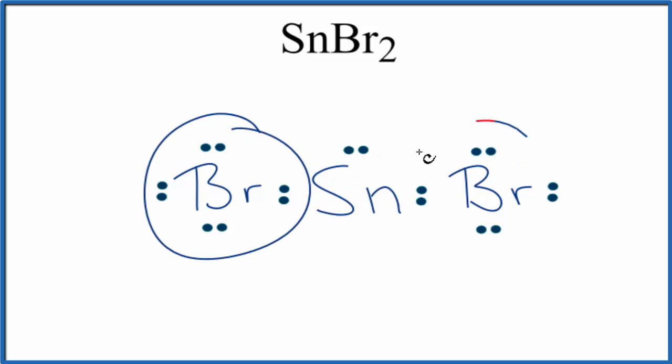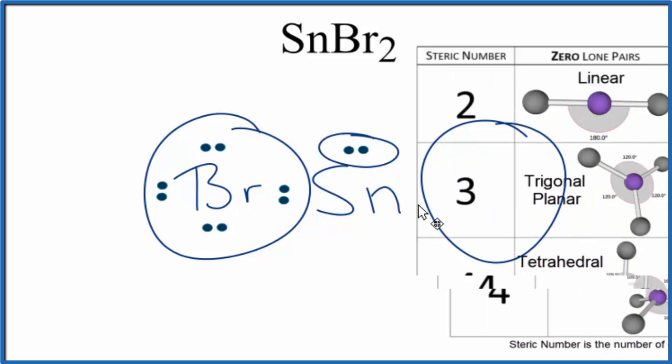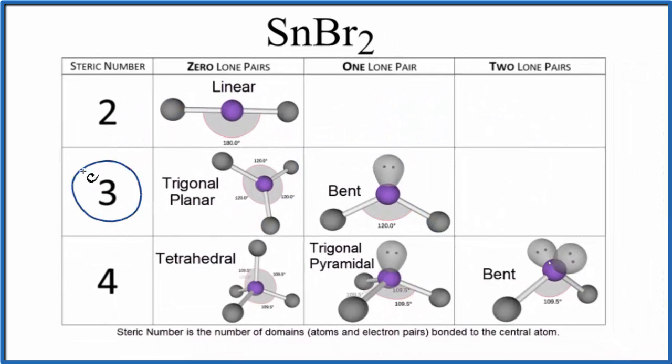two atoms attached, and one lone pair. So we have three steric groups, we have the one lone pair there. So our steric number is three, we have one lone pair.